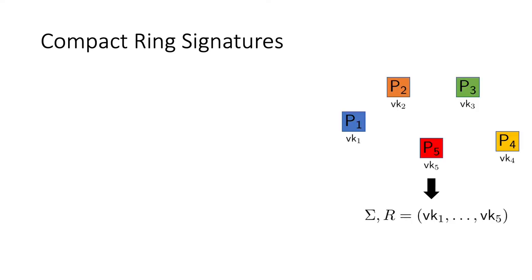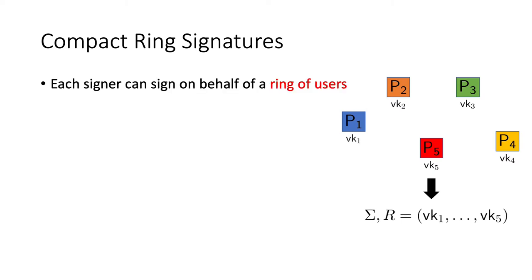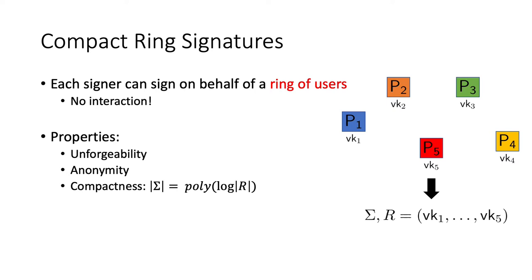Let us start by defining compact ring signatures. We have a scenario where there are multiple users, each with their own public and signing keys, and one would like to sign on behalf of a ring with multiple users. Crucially, we require that the signature be generated without any prior setup or interaction with other users in the ring. We expect the signature to satisfy unforgeability, just as standard signatures, and anonymity, meaning that signatures should not reveal which user in the ring created them. We also want compactness — the signature should have at most polylogarithmic size with respect to the number of users in the ring. There are the related notions of sublinear and linear ring signatures, which grow sublinearly and linearly in the ring size respectively.